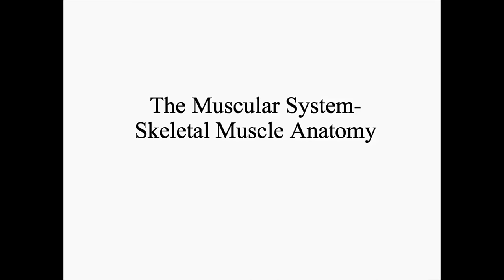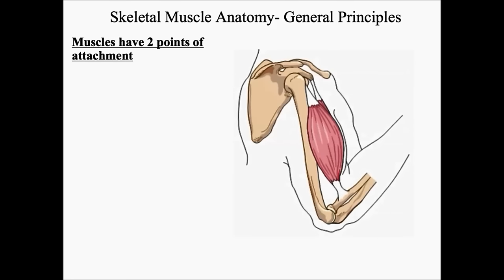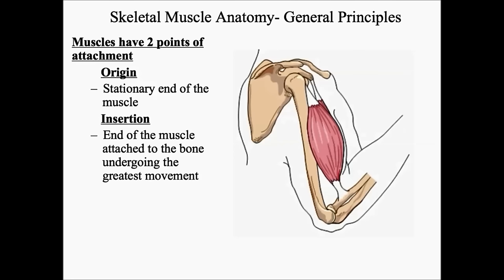In this section, we're going to talk about skeletal muscle anatomy. Skeletal muscles have two attachment points. The first is called the origin — the muscle attachment to the stationary bone, the bone that doesn't move. The second is called the insertion — the muscle attachment to the bone that will move. In the illustration of the bicep muscle, the upper attachment point is the origin because the humerus and scapula are stationary, and the lower attachment is the insertion because the radius is the bone that moves during flexion of the bicep.